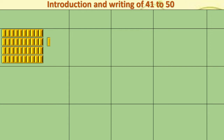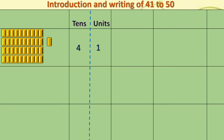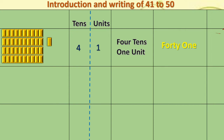Here you can see one more. So, this is 4 tens and 1 single — that is 1 unit. We will write in tens and units form. How many tens? 4 tens. And 1 unit. Same thing, we will write in words: 4 tens and 1 unit. And the number is 41. In numerals, this is 40 and 1.